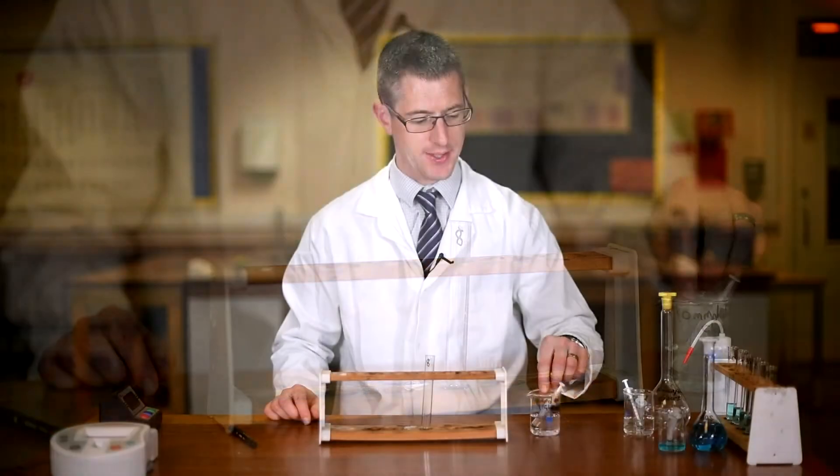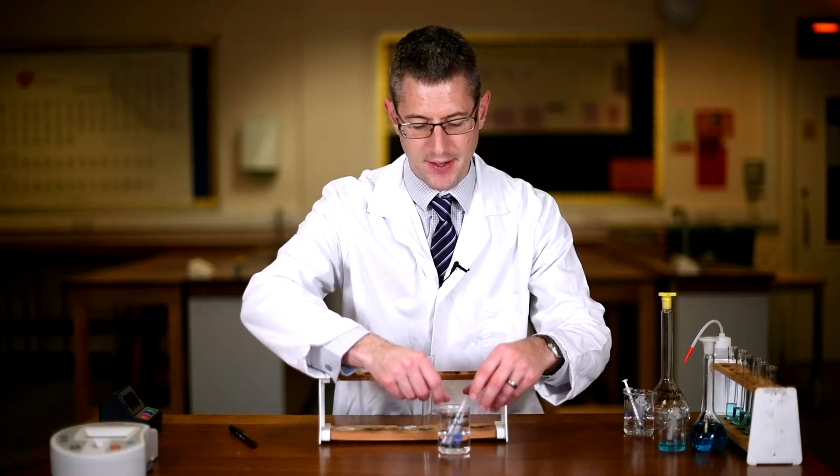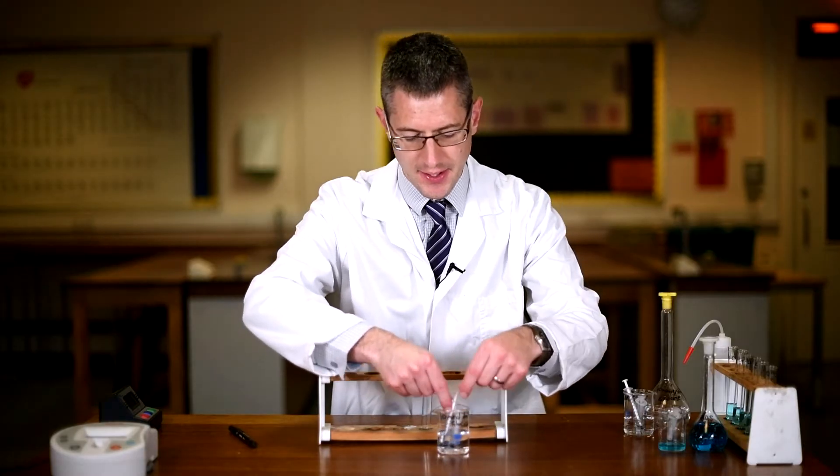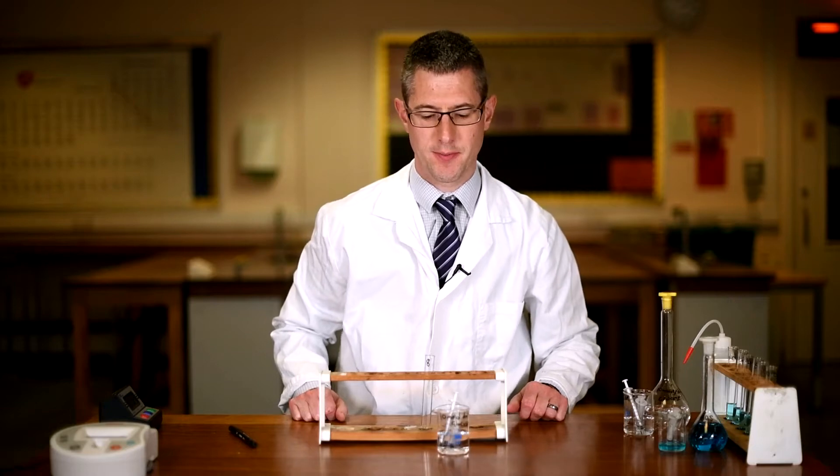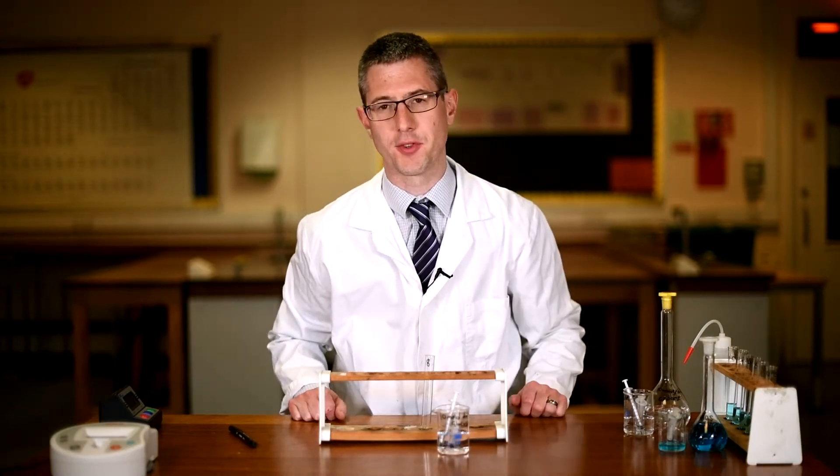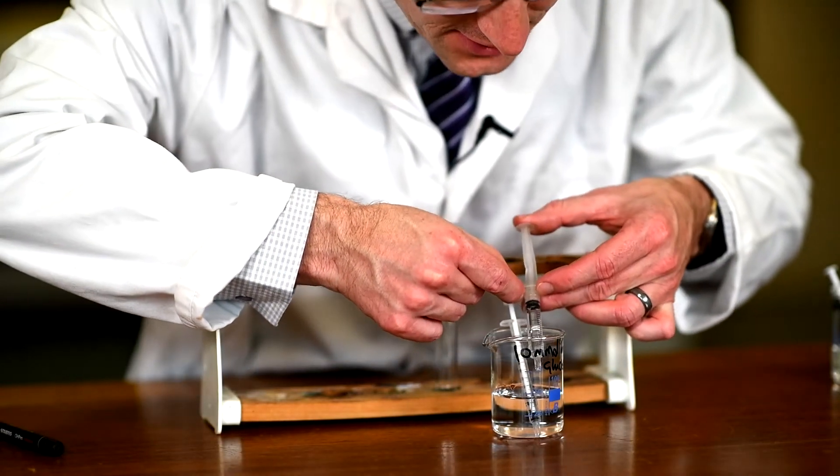We need 1.6 milliliters of glucose. So I'm going to carefully measure this out using a syringe. Now I have two syringes in this beaker. You need to think carefully about which syringe you would choose to measure out this volume. I have a two milliliter syringe and a one milliliter syringe. So using a two milliliter syringe, you get 1.6 milliliters of glucose.